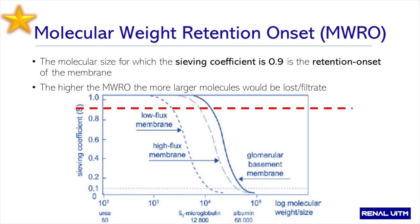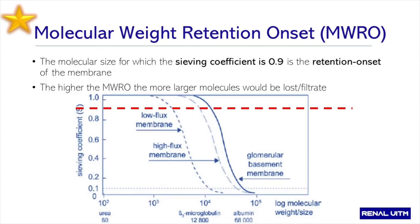This is the concept you need to understand: molecular weight retention onset. Molecular weight retention onset basically refers to the sieving coefficient at 0.9 — that's the retention onset of the membrane. The higher the molecular weight retention onset, the larger molecules will be filtrated. You can see that the high flux membrane has a higher retention onset compared to a low flux, meaning the area of permeability is higher and pushed to the right, more closely following the glomerular basement membrane pattern.